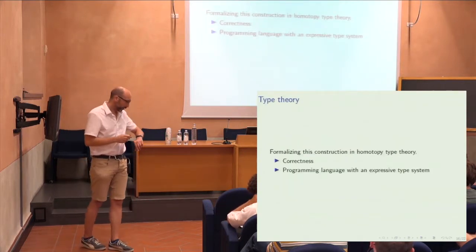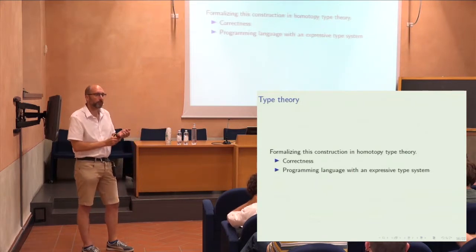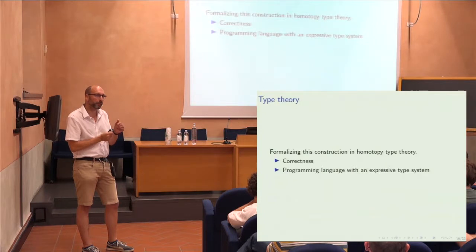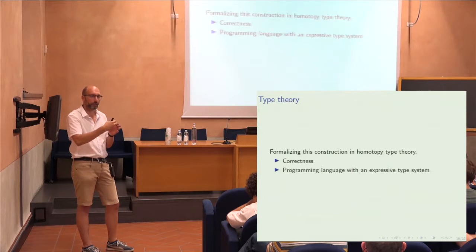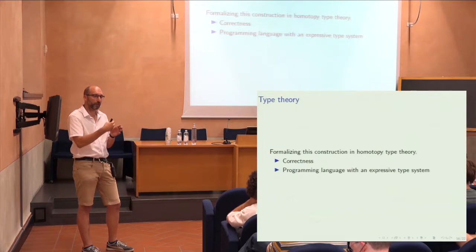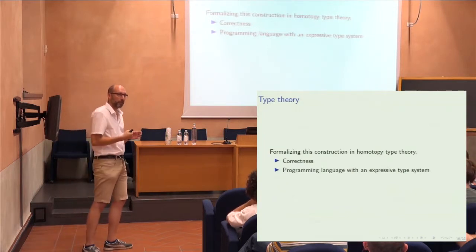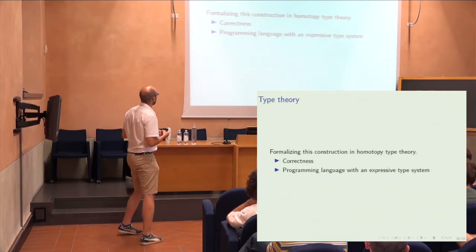Now I want to say a bit more about the formalization and how this extends to how we can incorporate the higher structure. We've not taken the standard topos of sets, but a different topos. So how can we extend this to higher toposes, as studied by Jacob Lurie and Charles Rezk for instance? Why do we want to formalize all of this in homotopy type theory?